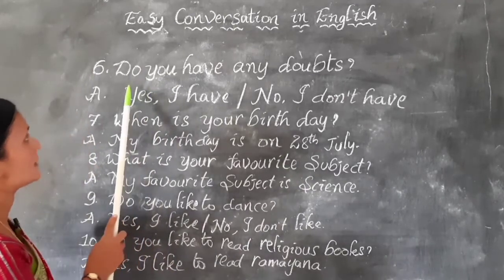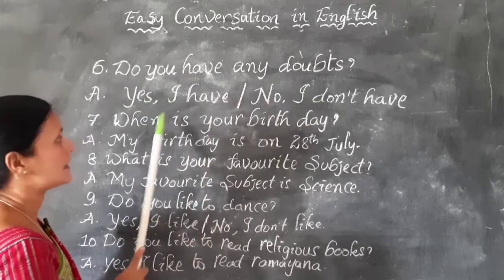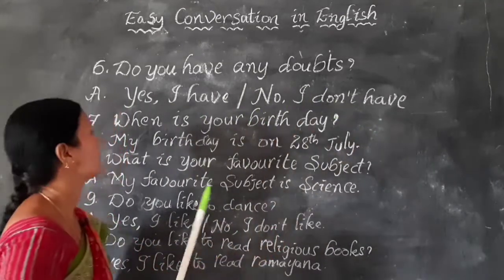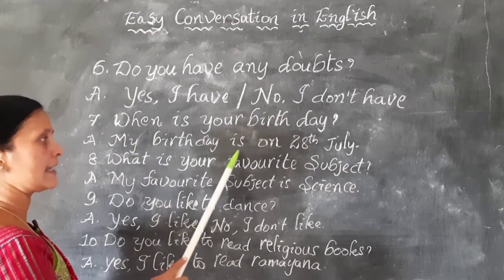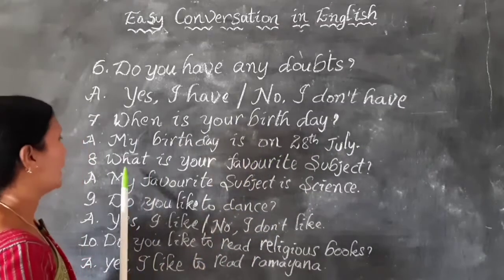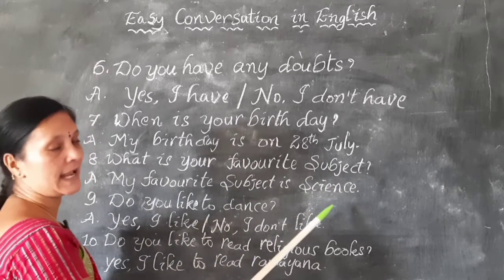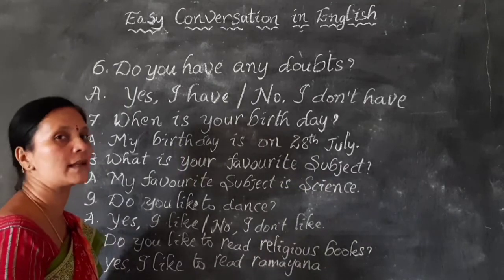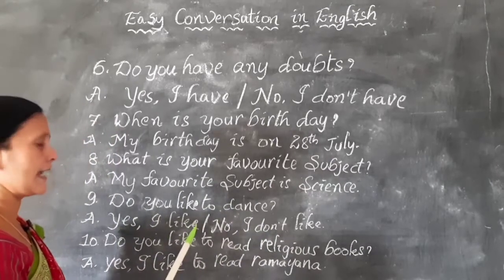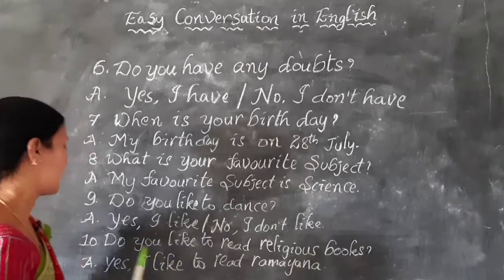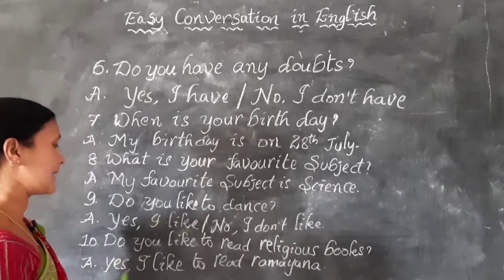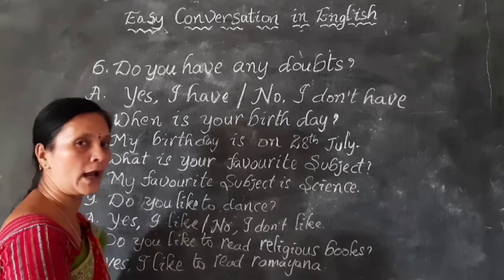Let me read all those questions once again. Do you have any doubts? Yes, I have. No, I don't have. When is your birthday? My birthday is on 28th July. What is your favourite subject? My favourite subject is science, or science is my favourite subject. Do you like to dance? Yes, I like. No, I don't like. Do you like to read religious books? Yes, I like to read Ramayana. Yes, I like to read Bible. Yes, I like to read Quran.